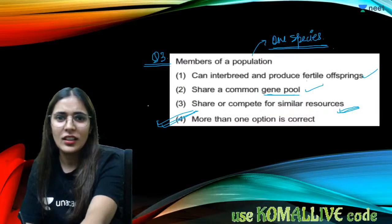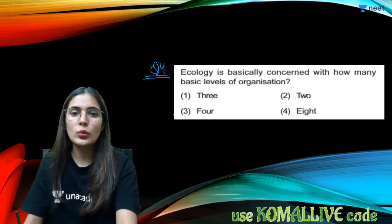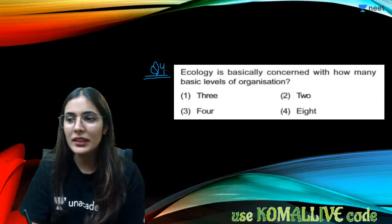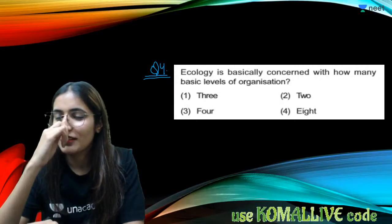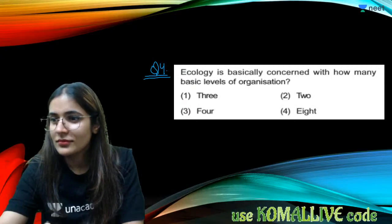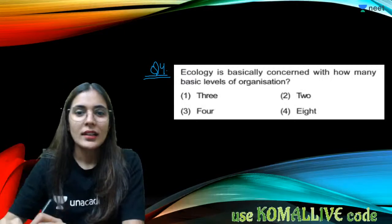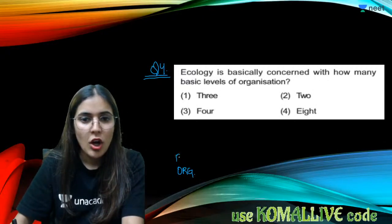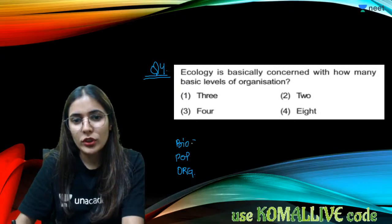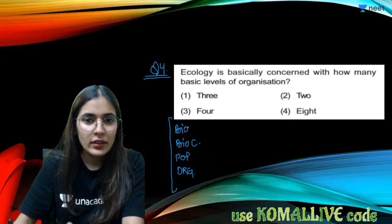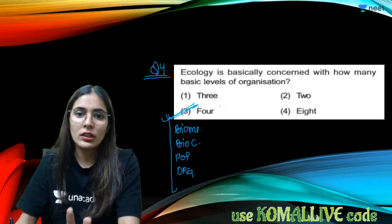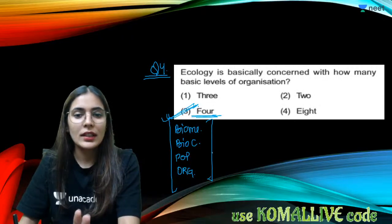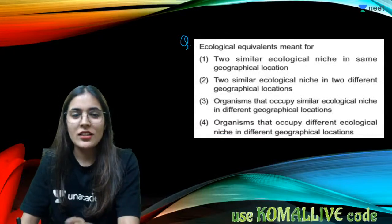Question number four: ecology is basically concerned with four basic levels of organization. These are organism, population, biological community, and biomes — that is four levels. The correct answer is the third option indicating four levels.